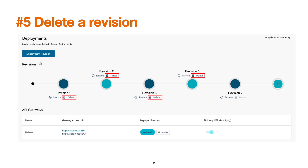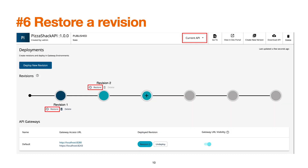We can delete a revision using the delete option next to each revision. At any point in time, if we would like to restore a revision, we just use the restore option to restore a particular revision. Now let's begin the demo.